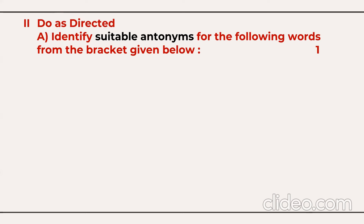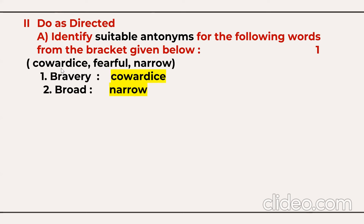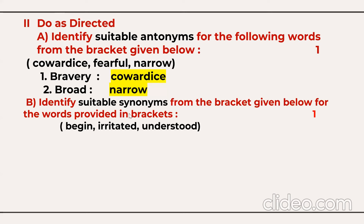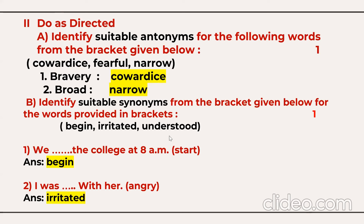The second question is 'do as directed' — vocabulary. First, you need to identify suitable antonyms for the given words. Antonyms mean the opposite meaning. For example, the antonym of bravery is cowardice, and the antonym of broad is narrow. Then suitable synonyms, meaning similar meaning — the synonym of start is begin, and the synonym of angry is irritated. Antonyms carry one mark and synonyms carry one mark.